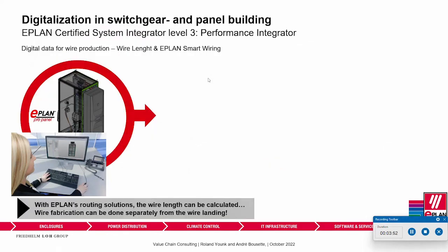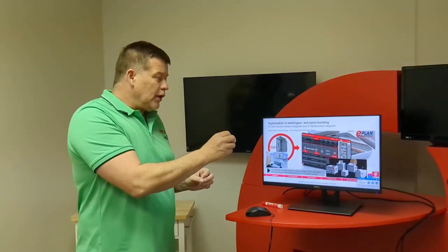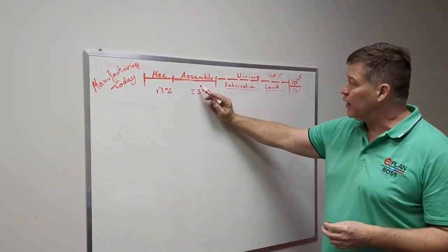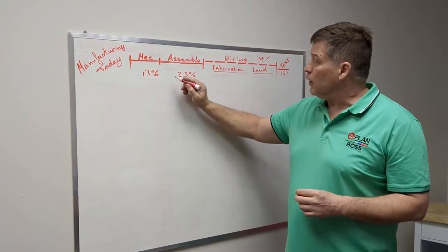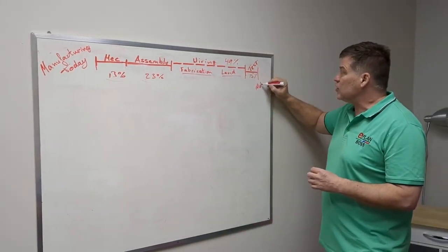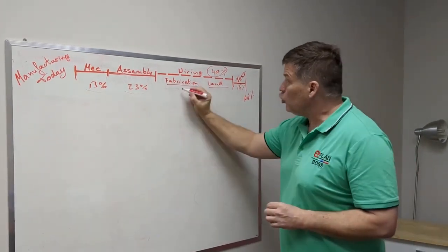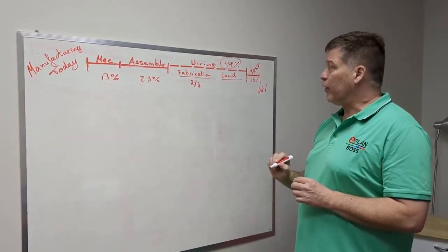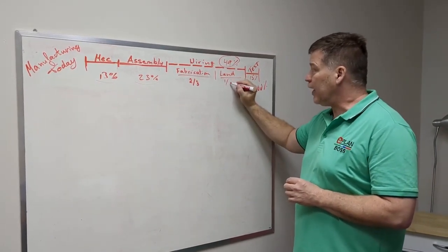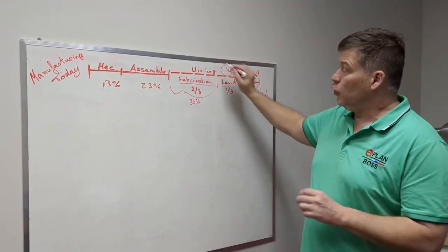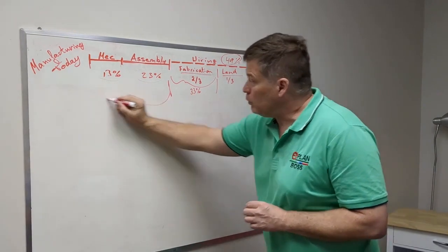The third level is the Performance Integrator. He actually uses the routing solutions of ePlan to calculate wire lengths. This is a bit more complex to explain, but what it does is help you separate the wiring from the landing. Let me show you on this graphic. According to the University of Stuttgart study, 13% and 23% of the total time is spent on mechanical fabrication, and wiring represents pretty much half of your time. Two-thirds of that is wire fabrication. If you have the length, you can separate wire fabrication from landing. That 33% of your whole wiring can actually be prefabricated.